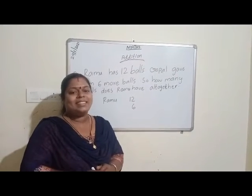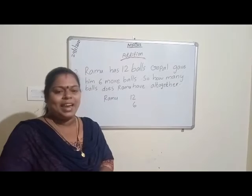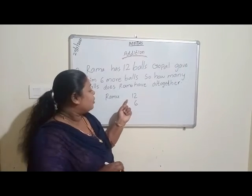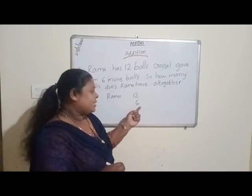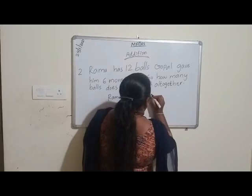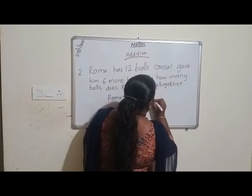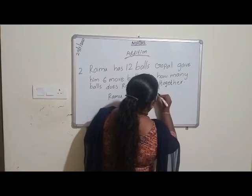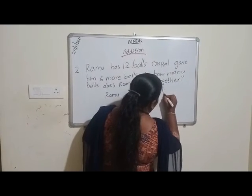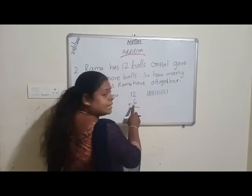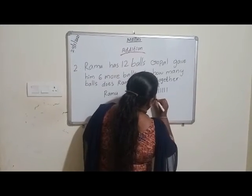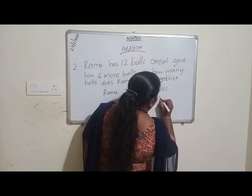Altogether means we have to add. Now let's find out. We have 12 sticks and 6 sticks. 1, 2, 3, 4, 5, 6, 7, 8, 9, 10, 11, 12. And 6 sticks. 1, 2, 3, 4, 5, 6.